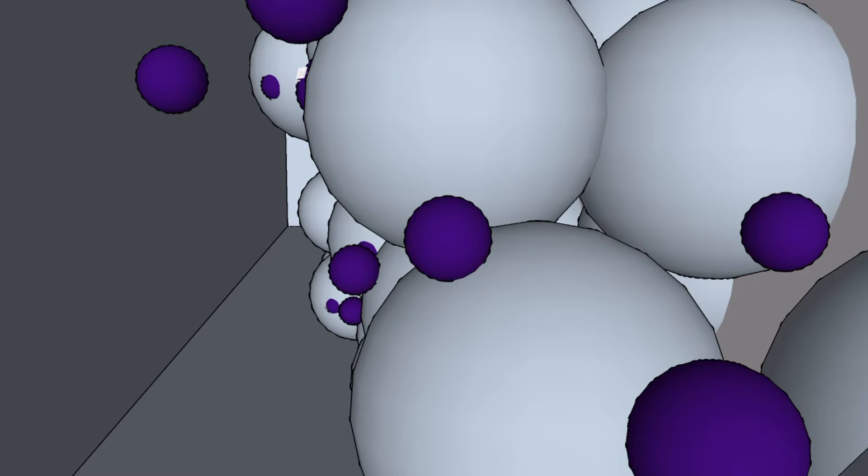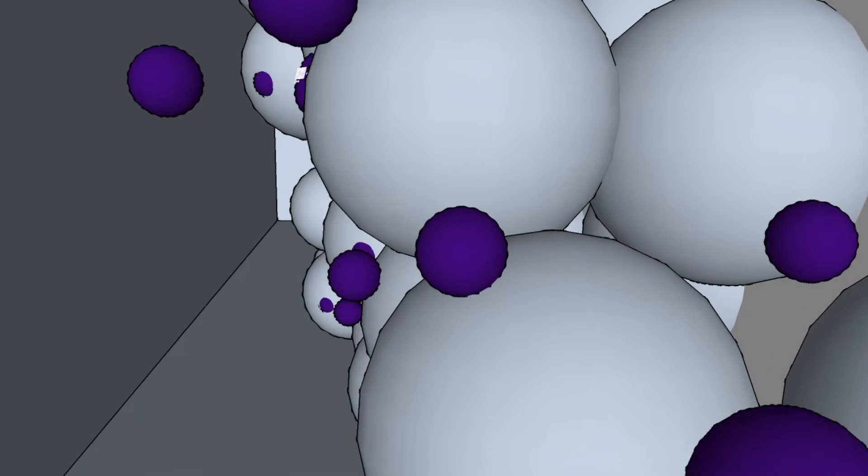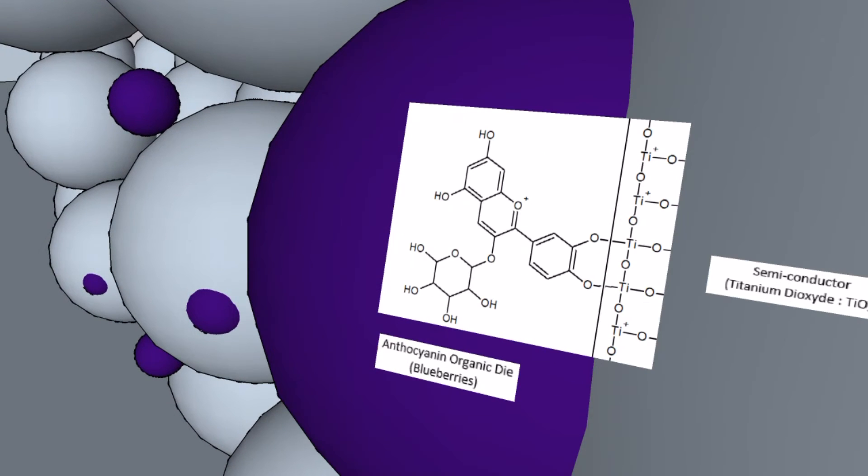The purple spheres you can see represent the dye used in the DSSC. It is injected in the titanium dioxide surface and creates bonds with the titanium atoms as you can see on this picture. The oxygen atoms at the end of the carbonated chains of the dye create a bond with the titanium atoms from the TiO2.